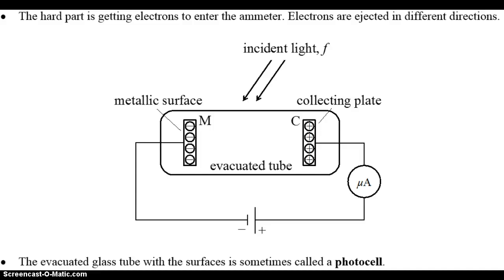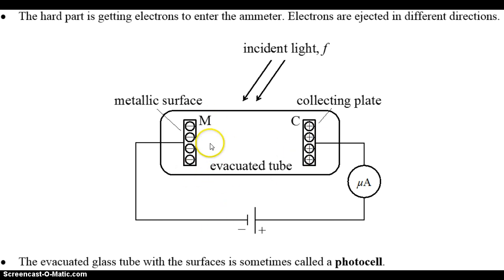In the last video, we examined this apparatus that we use to measure the photocurrent from a metal surface. Photocurrent is just the number of electrons ejected from the surface per second. We can measure this only if we get all of the electrons to pass through an ammeter — we can't add extra electrons or lose any, or we won't get an accurate current reading. We keep all electrons passing through the ammeter by putting a positive charge on the collecting plate, attracting the electrons through the wire and ammeter to the positive terminal of the battery. This is how we measure the photocurrent.